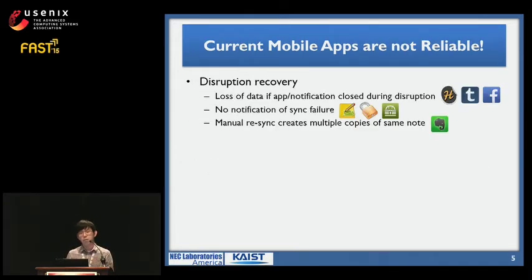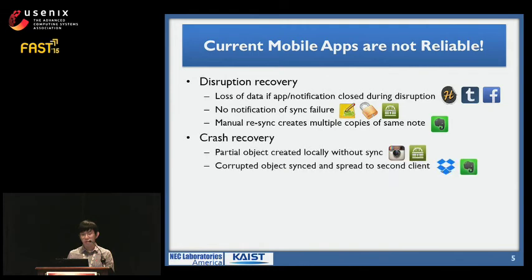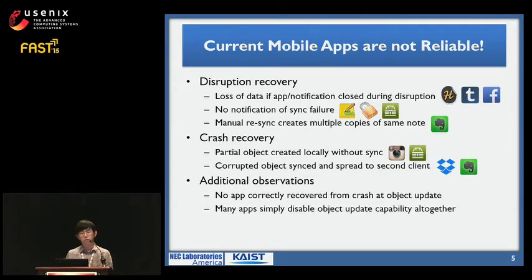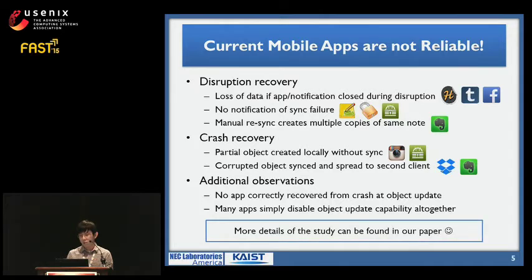In summary, we found that current mobile apps are not reliable. In the disruption failure test, apps like Hue, Tumblr, and Facebook lose data if the app or notification was closed during disruption. Some apps like TomDroid, UPM, and KeePass for Android didn't even notify the user of a sync failure. Interestingly, if we tried to manually sync during disruption, Evernote created multiple copies of the same notes. In case of a crash failure, Instagram and KeePass for Android created partial objects locally without syncing. More seriously, Dropbox and Evernote ended up corrupting the object which was synced to the second client. No app in our study was able to recover correctly from a crash during object update. If you are interested in more details, you can find that in our paper.